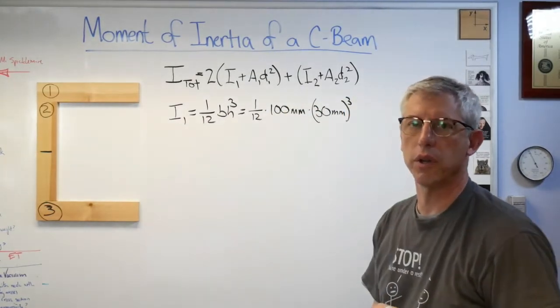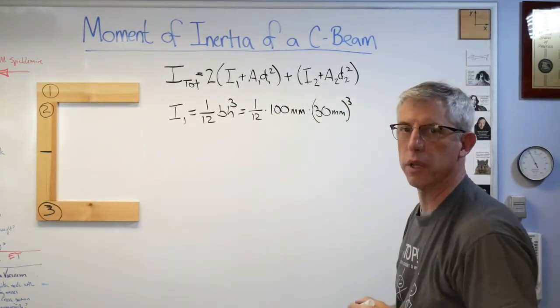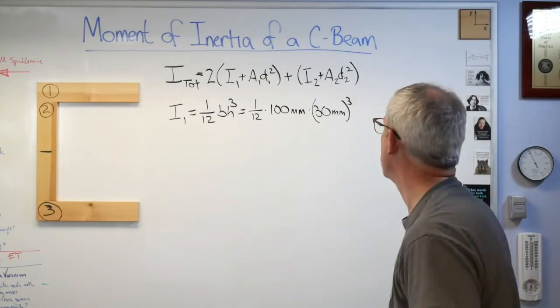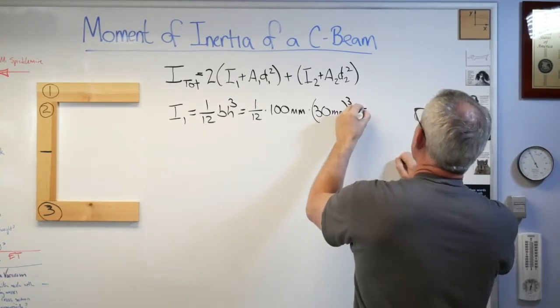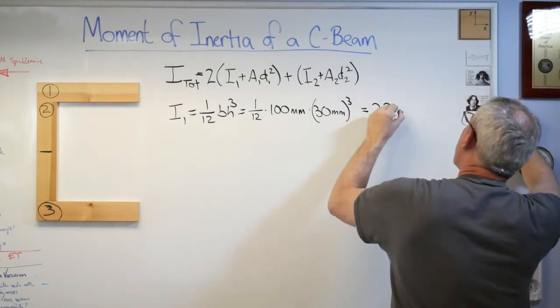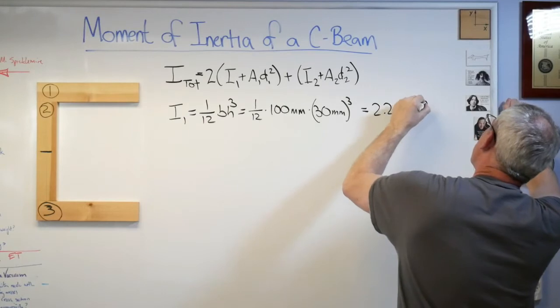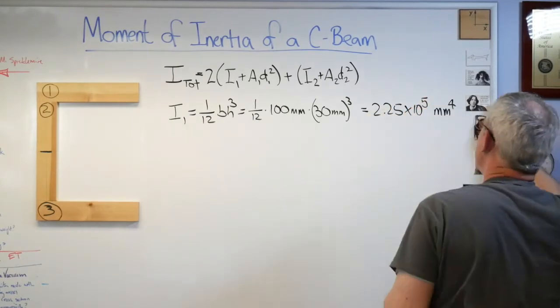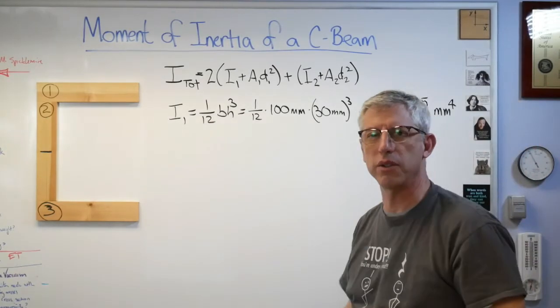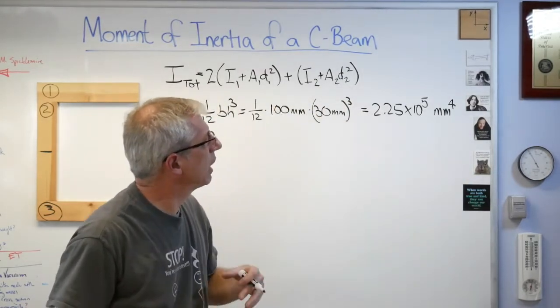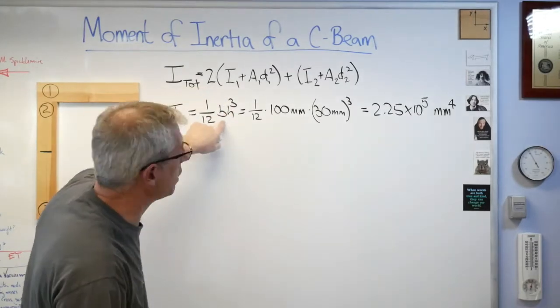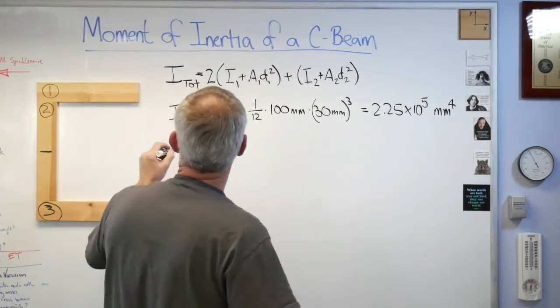And I'm doing this in millimeters. You want to do this in inches, you can't do it. The units don't really matter, because remember, physics doesn't care about our units. Physics just works. Units are something we put in there to make it mathematically a little more tractable. So when you work that out, you get 2.25 times 10 to the 5th millimeters to the 4th. Now, millimeters to the 4th is a really weird unit. Area to the 4th is not intuitive. That's the units that come out of this calculation. That's what's built into that expression. So it's area to the 4th.